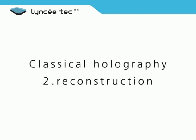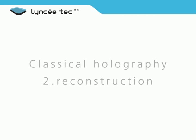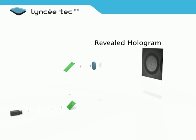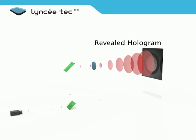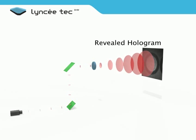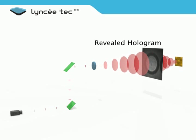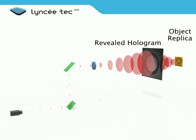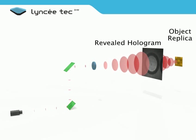To retrieve the object, the plate is lit by a coherent light beam identical to the reference beam used at the recording of the hologram. It permits 3D viewing of the original object exactly as registered, with all optical information retrieved in full, but no topographical or vertical measurements are yet possible.